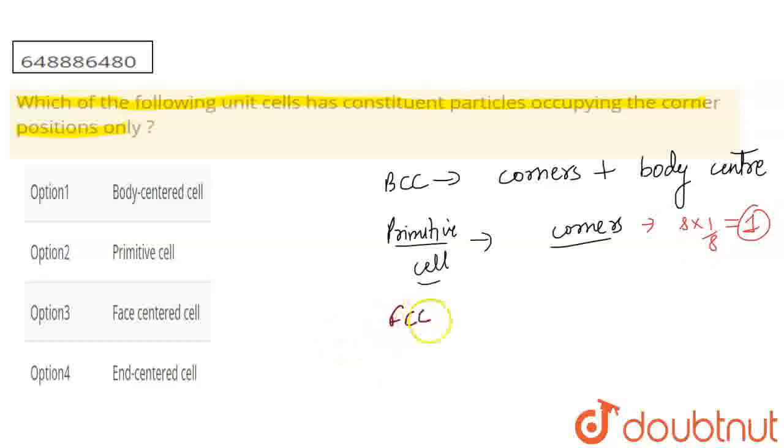So now we are talking about FCC. In the face-centered cell, we have corners and each face is present. And what happens in the end cell?